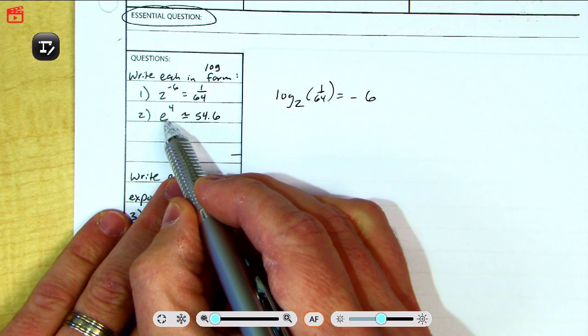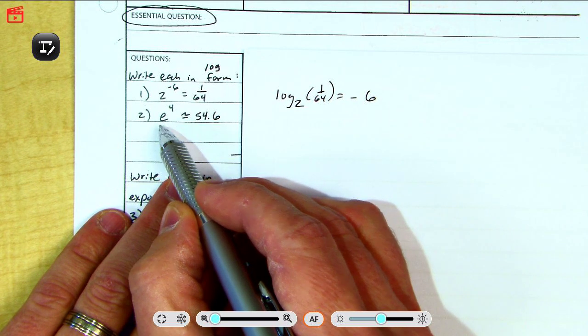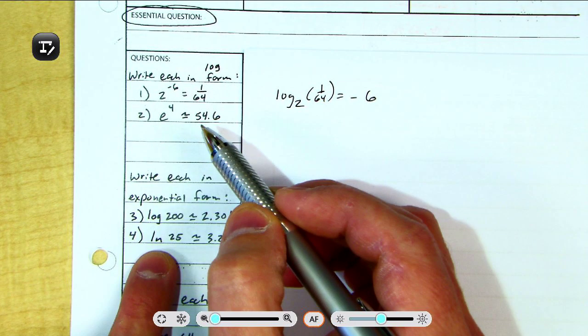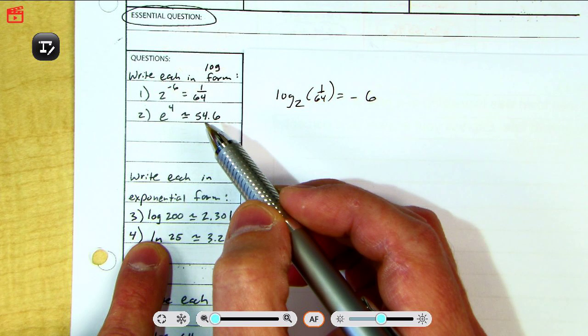Now, the natural base e, if you remember, that was used in the APERT Continuously Compounded Interest Formula. The natural base e and this log right down here, ln, natural log, those always go together.